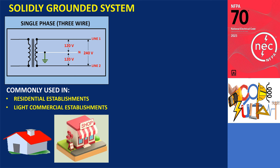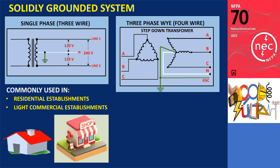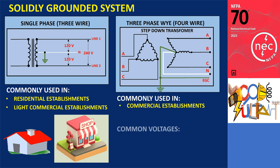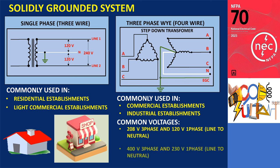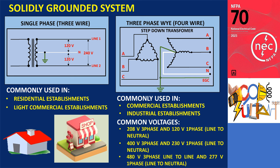Single-phase, three-wire configurations are commonly used in residential and light commercial establishments. The circuit breaker panels typically have two live hot wires and a neutral. Three-phase, four-wire is the most common commercial building electric service, with voltages of 208 volts three-phase and 120 volts single-phase, used to power lighting, small appliance loads, and smaller AC systems. In larger facilities, the voltage can be 480 volts for three-phase and 277 volts for single-phase, where 480 volts is used for larger equipment.